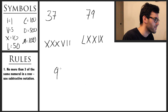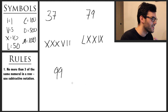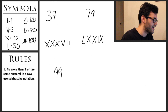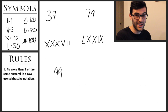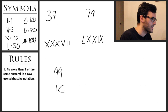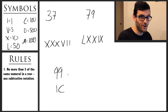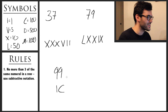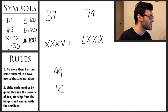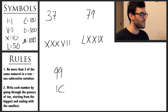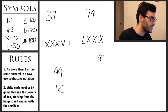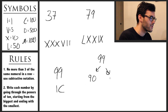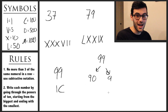Let's say we've got the number 99. You might be thinking: C is 100, and clearly we're going to have to use subtractive notation for this. Could we just write it as I before 100 — IC — and call it a day? The answer is no. Because of the second important rule for Roman numerals, we have to write each number by going through the powers of 10, starting from the biggest and ending with the smallest. So when writing 99, first we have to write 90, and then it has to be followed by the number 9.